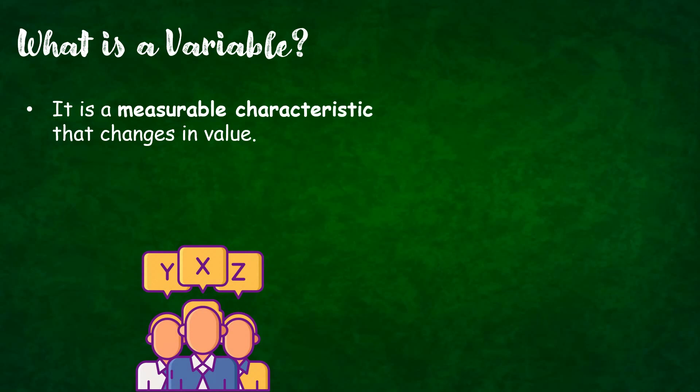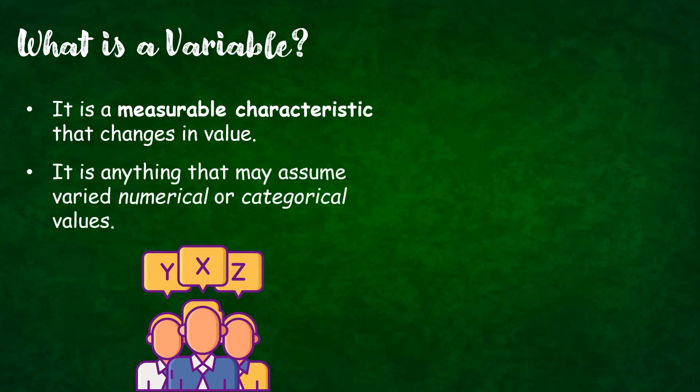One of the aspects of research is to describe and explain variables. That's why it is called the central concept of conducting research. But do you know what is a variable? A variable is a measurable characteristic that changes in value. It is anything that may assume varied numerical or categorical values. For instance, gender is a variable — it may be male or female — but it won't be applicable as a variable if the setting of the research is an exclusive school for girls.